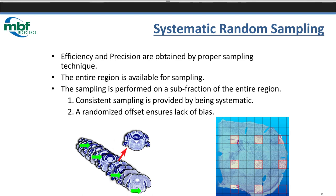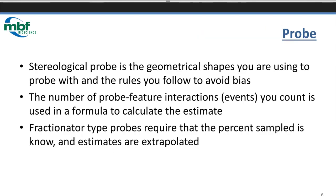I want to reiterate from last session that we should always be using systematic random sampling, both on the section and the intersection level. What is a probe? It's the virtual geometrical shapes that our program StereoInvestigator is going to generate. Our job is to mark the interactions between these probes and whatever type of data you're trying to estimate. We're going to try to stick with fractionator type probes, and they require that we keep track of the percent that is sampled, then do an extrapolation to come up with an estimate.